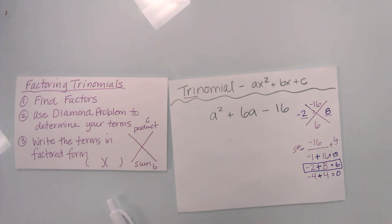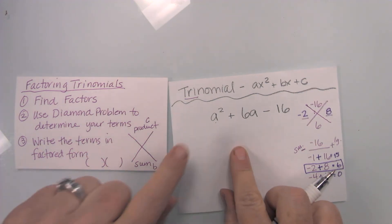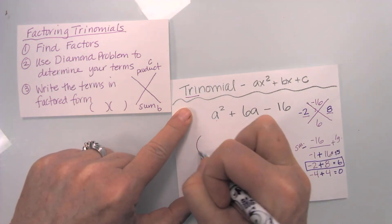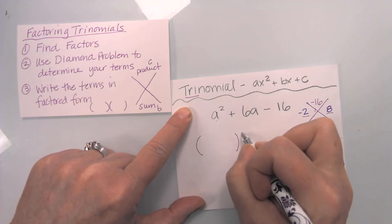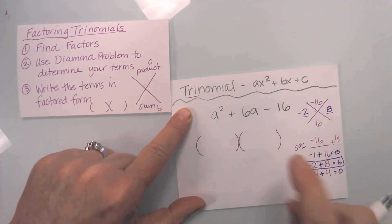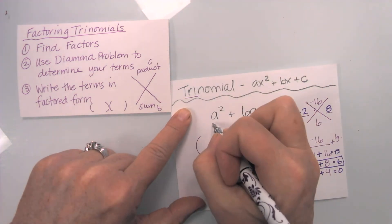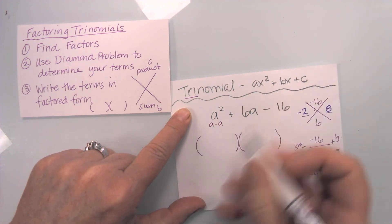So now I'm going to come back over here, and I'm going to write my terms in factored form. So I'm going to set up my parentheses. And I notice that I have two a's, a times a, so I can divvy those up. I give an a to each one.